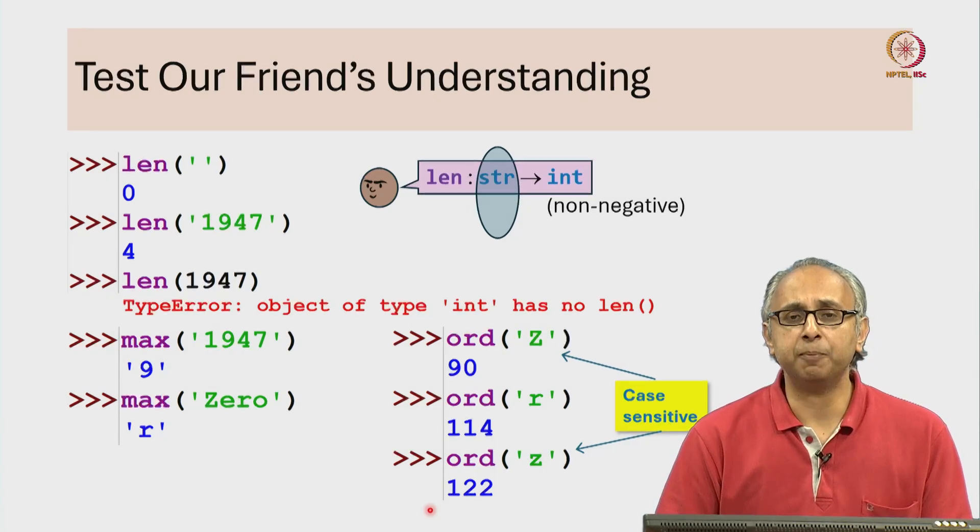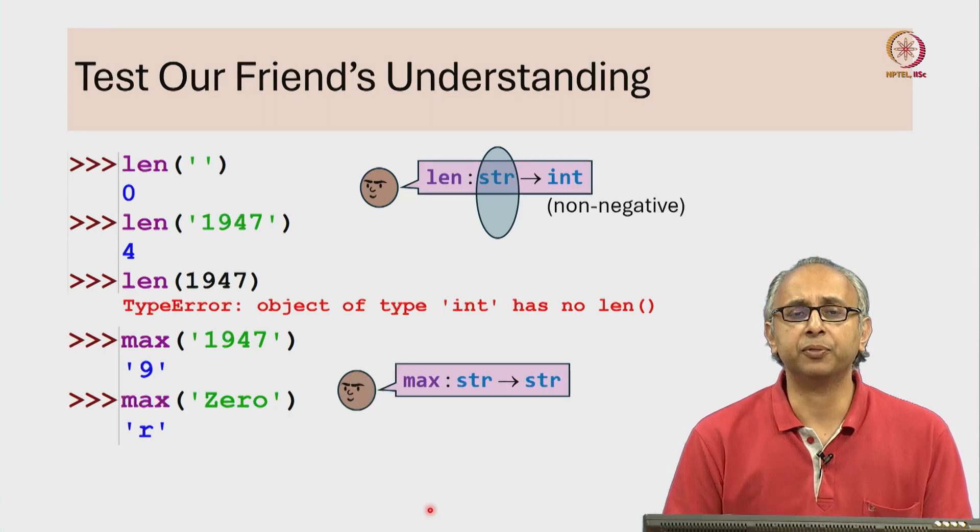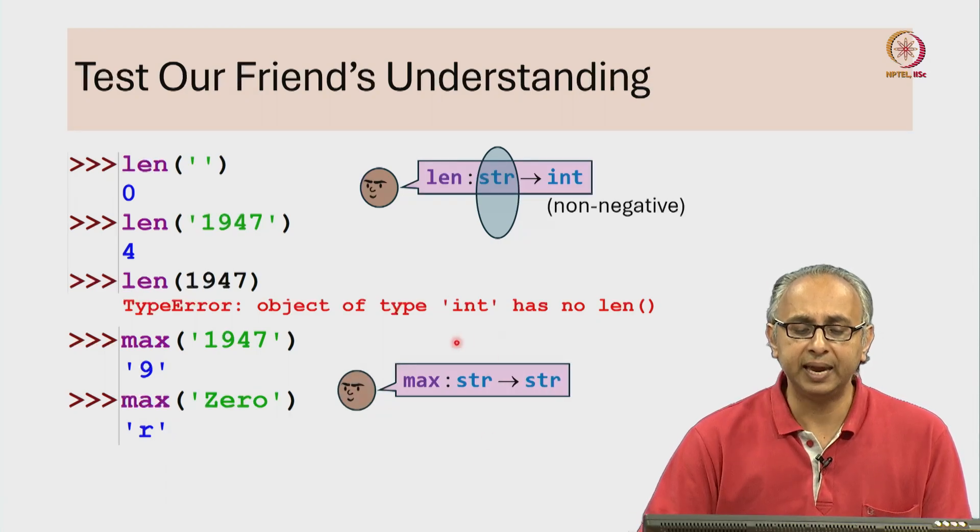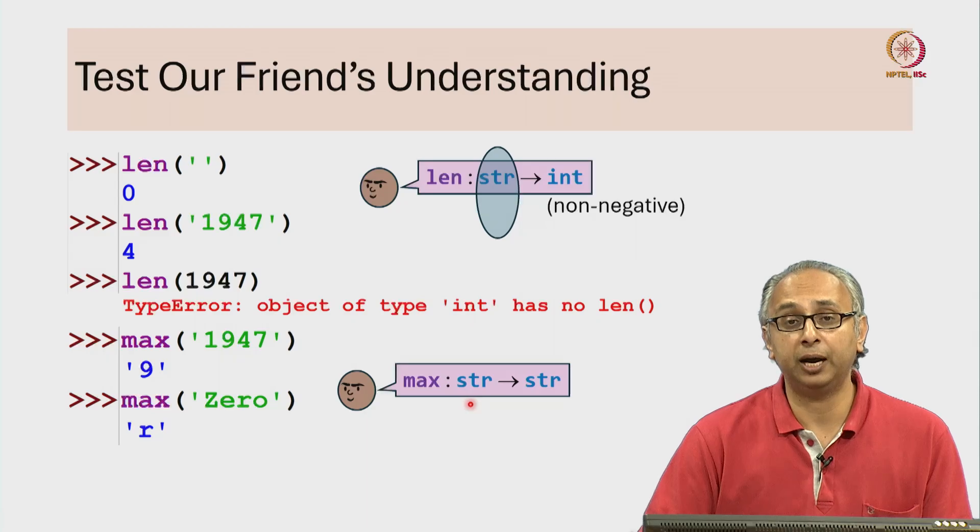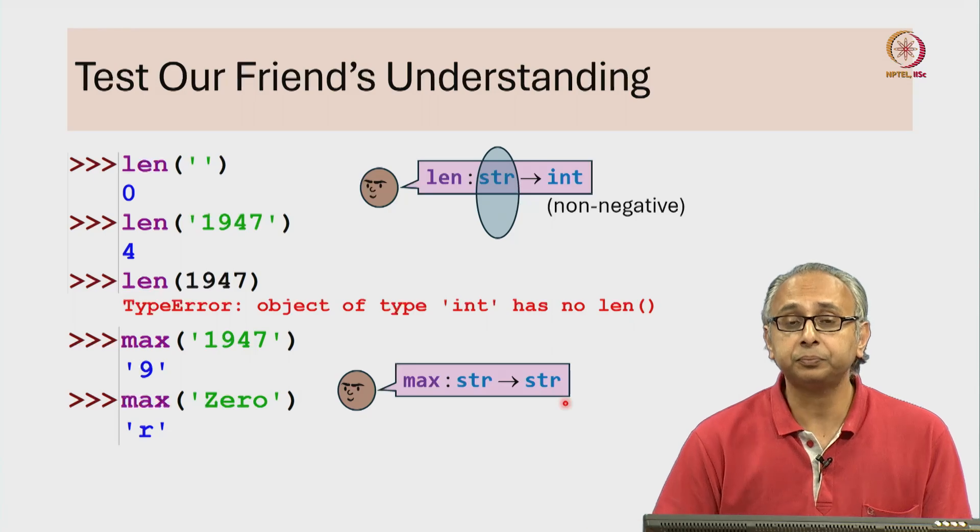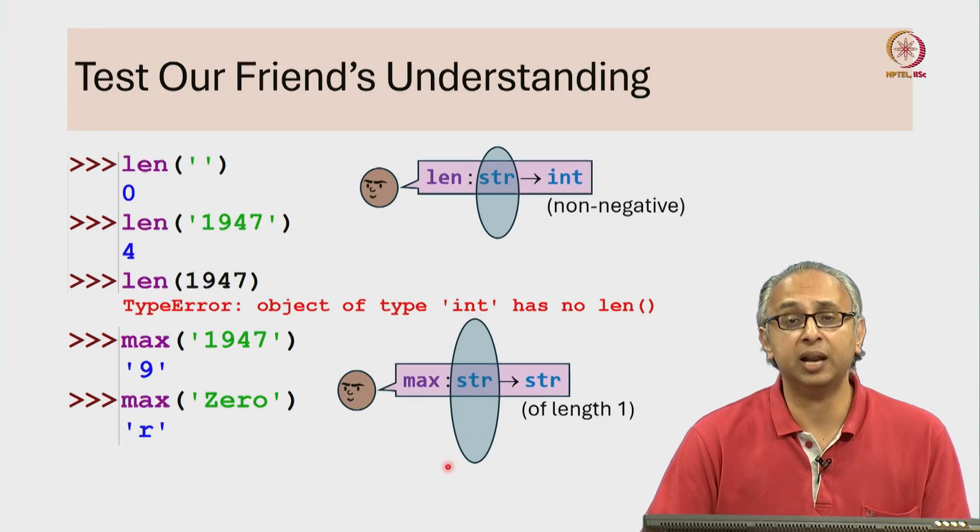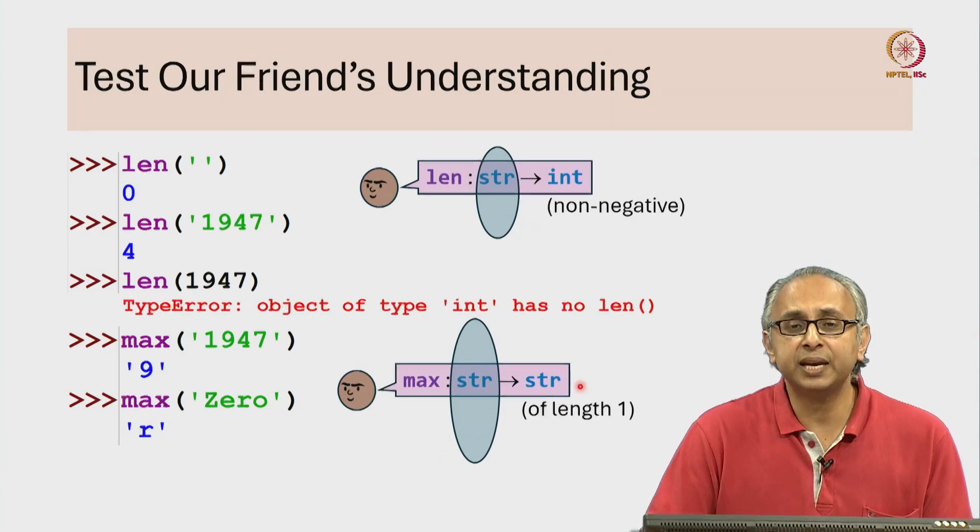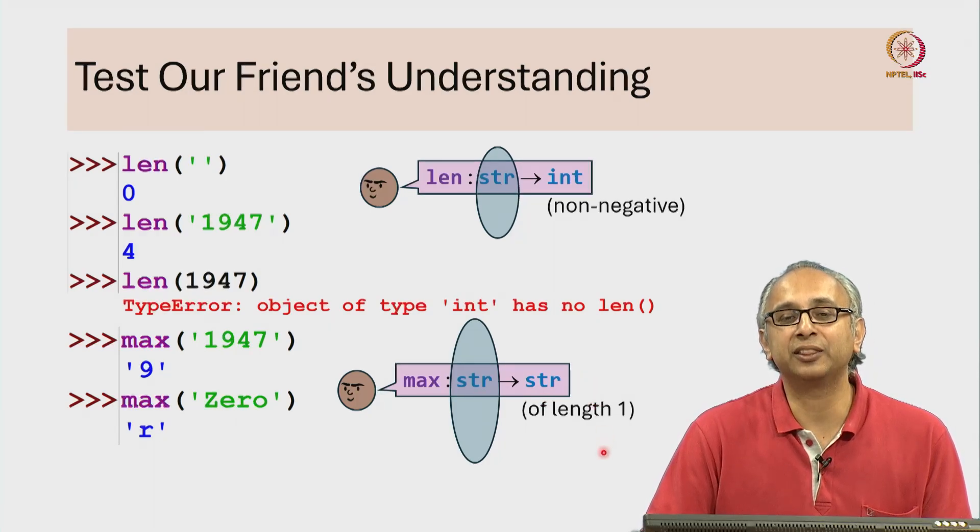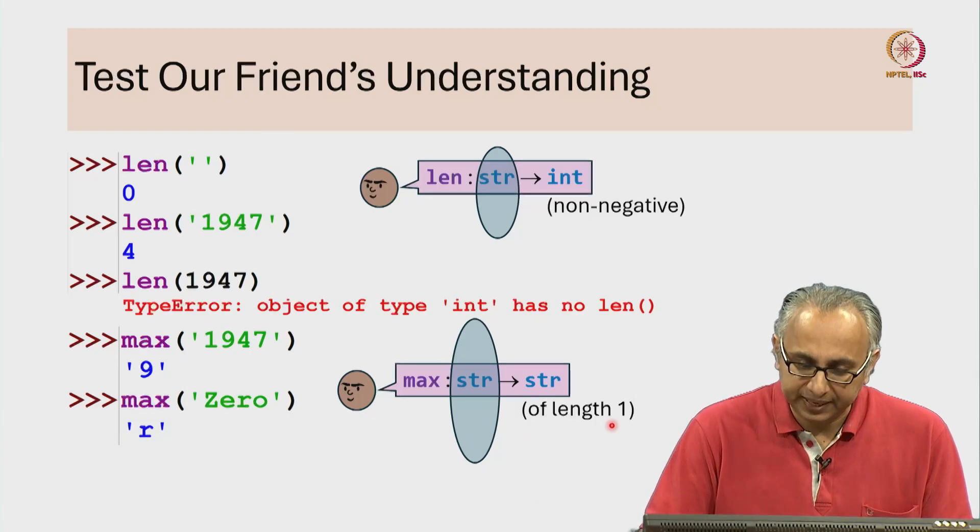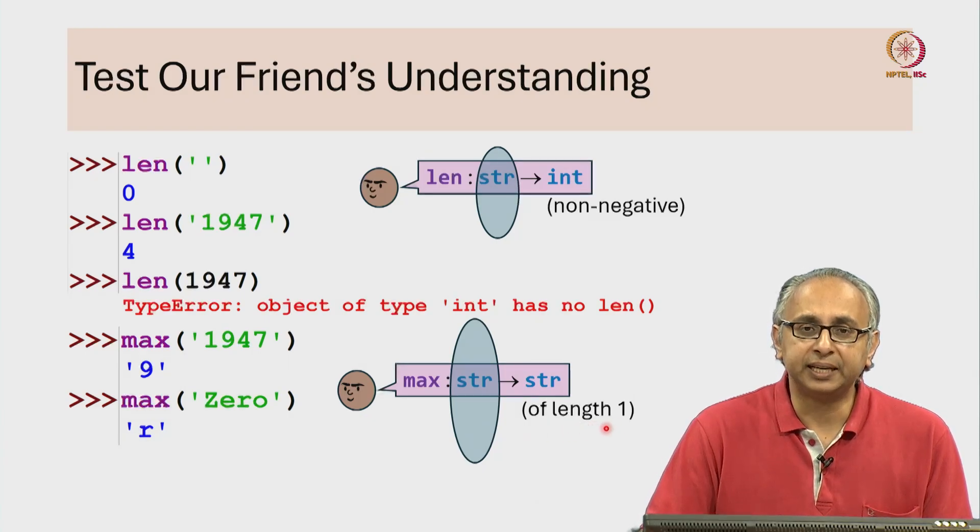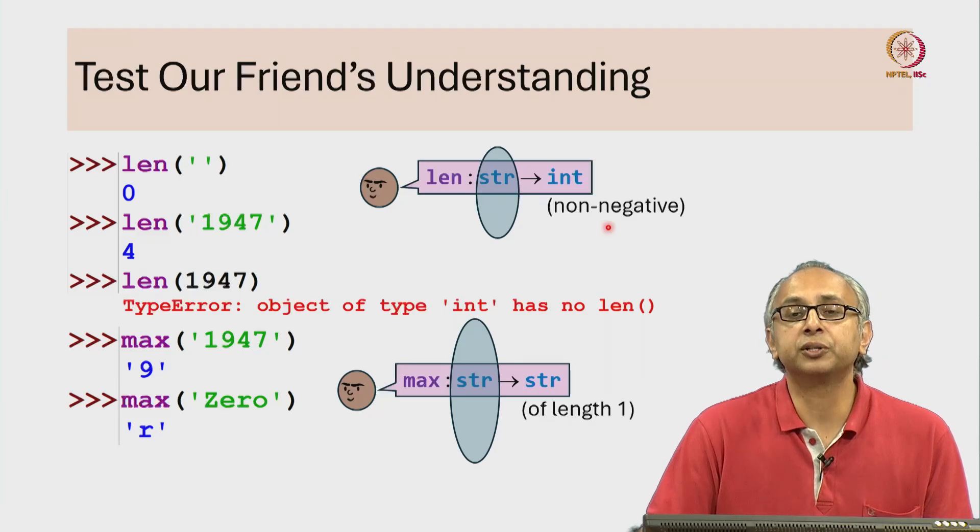Let's come back to our max function. Our friend thinks about this and says it looks like the max function takes inputs from the set str and returns an output in the set str. Once again, this statement is not strictly true. The input is actually potentially larger than just the set of strings. And if the input is a string, then the output is actually a string of length 1. But that is not technically an error in the same way this was not really an error.